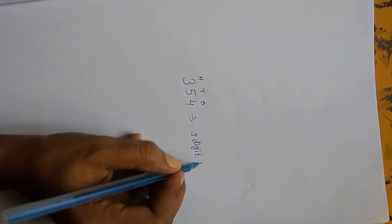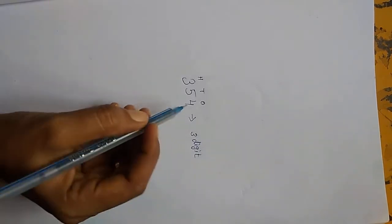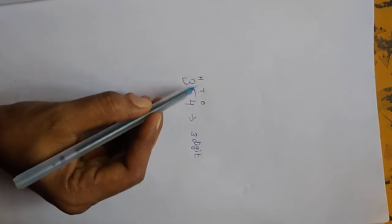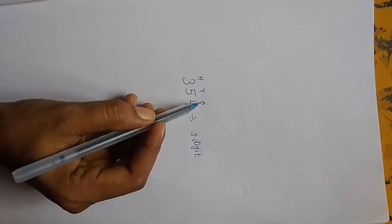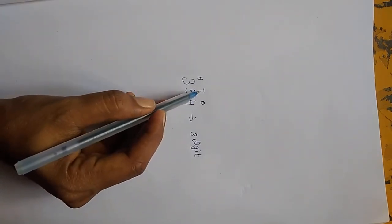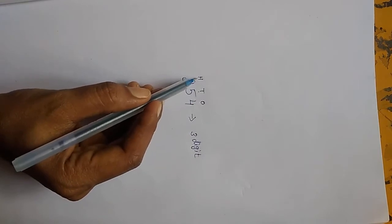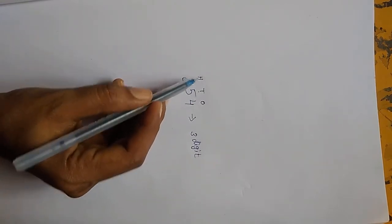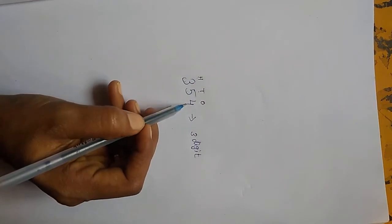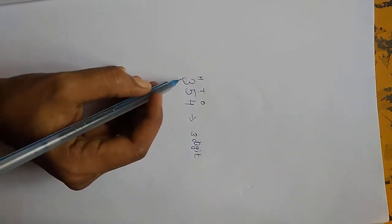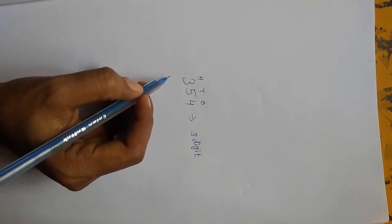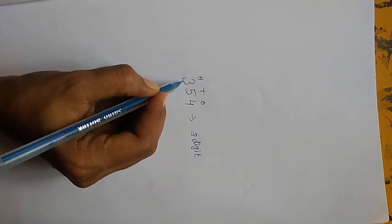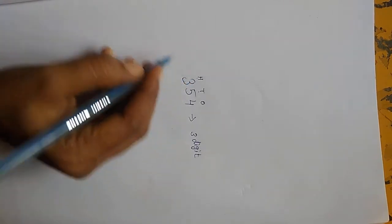What are the place values here? Ones, tens, hundreds. O means ones, T means tens, H means hundreds. So the number is 354. How to write the number in words, children? Let us see. How many hundreds are here? 300.